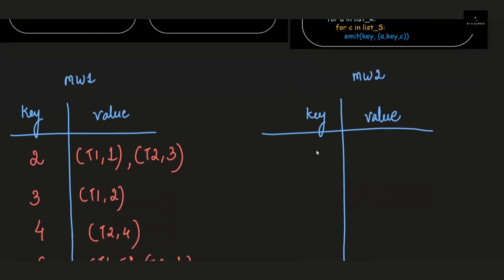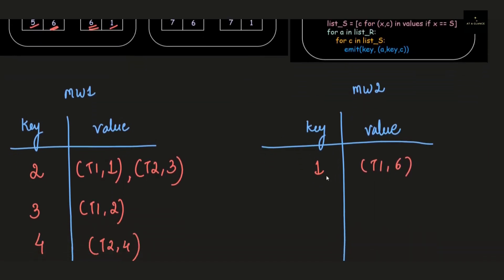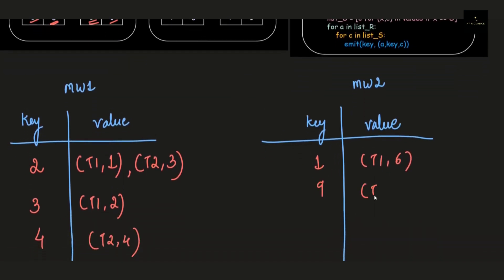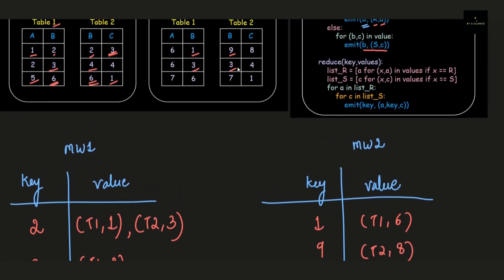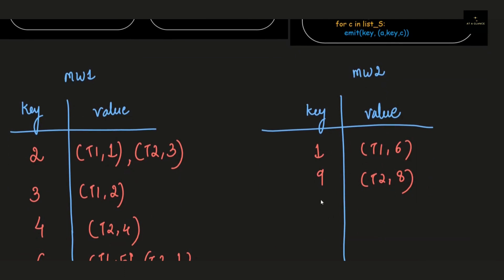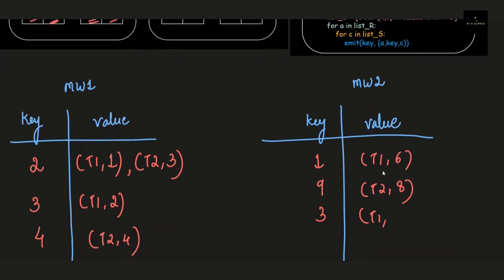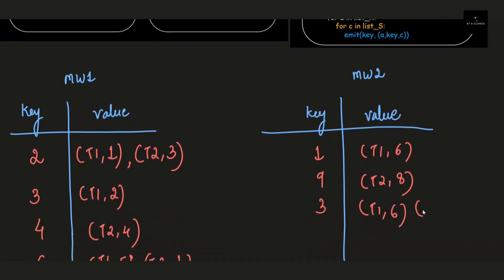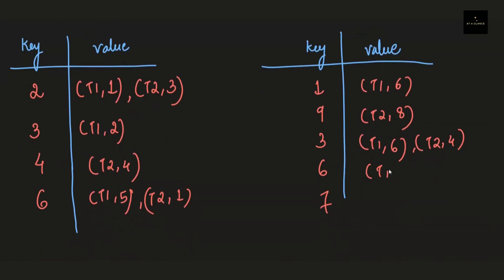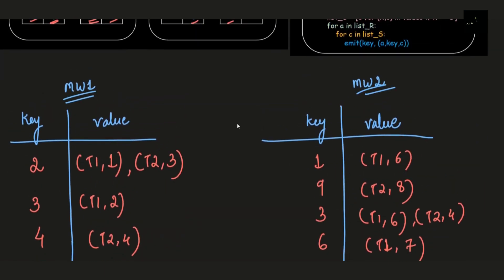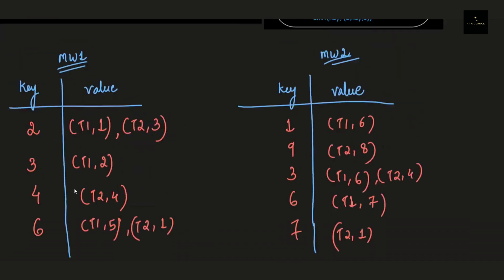Now we move to Map Worker 2. The procedure is very similar: take the common attribute value and put it in the key section, then in the value section write the tuple of (relation, value under the uncommon attribute). All records from Map Worker 2 have now been successfully converted into key-value pairs.